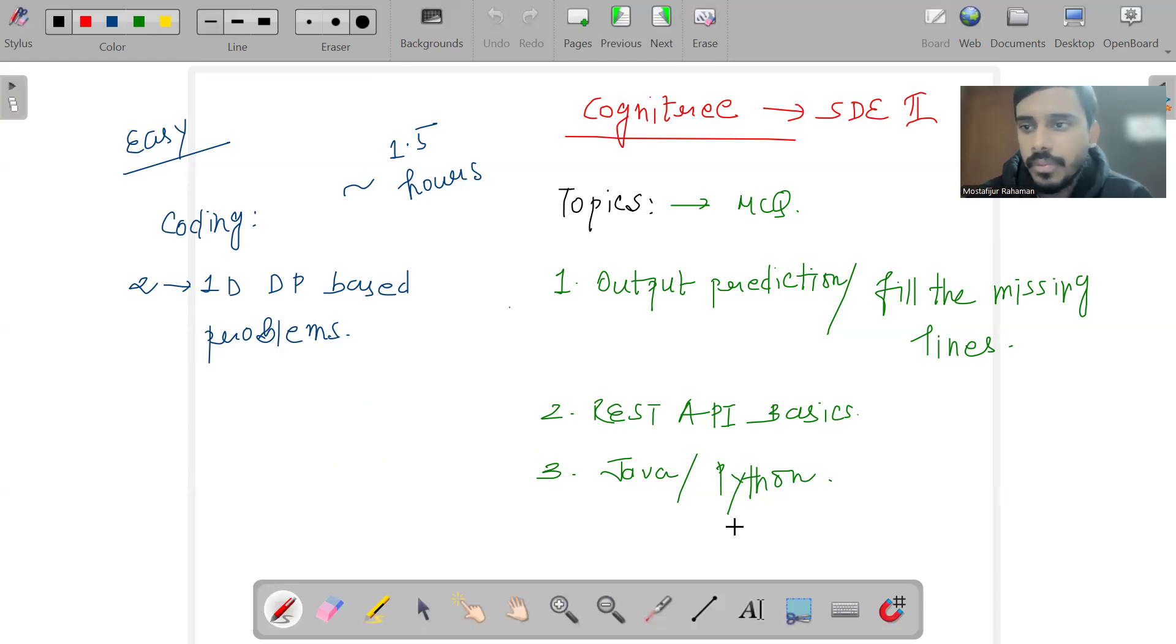These are the two languages specifically they gave, and I opted for the Python language sections. In the coding scenarios, they gave two 1D DP-based problems and I was able to solve them within 10 to 20 minutes.